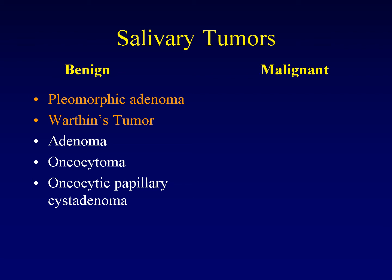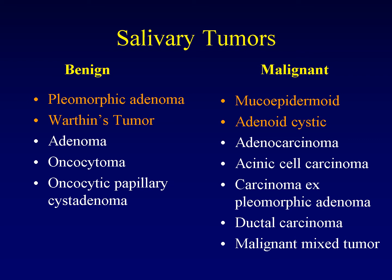The most common malignancy to affect the parotid gland is mucoepidermoid carcinoma. Close behind is adenoid cystic carcinoma, and then there are a wide variety of less common diseases including adenocarcinoma, acinic cell carcinoma, carcinoma ex pleomorphic adenoma, ductal carcinoma — which is histologically similar to ductal carcinoma of the breast — and a true malignant mixed tumor, which is a combined carcinosarcoma that is extremely rare.